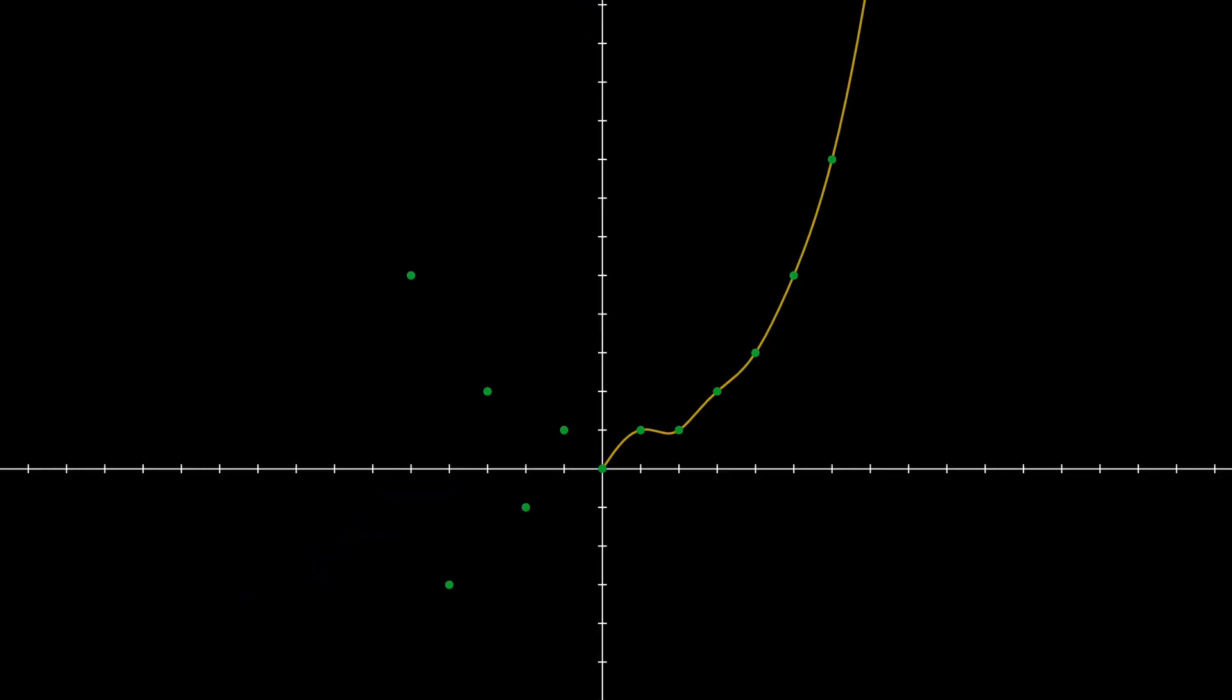We can see that the line goes through the points we had plotted previously. But there is a problem. Since the absolute value is a distance, it is always positive. So this line does not go through the negative Fibonacci numbers.